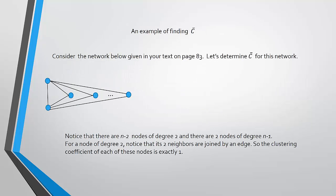Here's an example from your text on page 83. Let's determine C-bar, the clustering coefficient that uses the average, by finding the clustering coefficient of each node. Notice that there are two nodes that are of degree n minus 1 and the remaining n minus 2 nodes are of degree 2. The nodes of degree 2 have just two nodes in their neighborhood, there is one edge, and there is at most one possible edge. So all nodes of degree 2 have clustering coefficient 1.